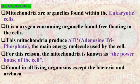What is mitochondria? Mitochondria are organelles found within the eukaryotic cells. It is an oxygen-consuming organelle found free floating in the cells. Mitochondria produce ATP, i.e. adenosine triphosphate, the main energy molecule used by the cell to perform its metabolic processes. For this reason, the mitochondria is known as the powerhouse of the cell. It is found in all living organisms except bacteria and archaea.